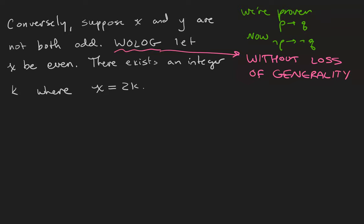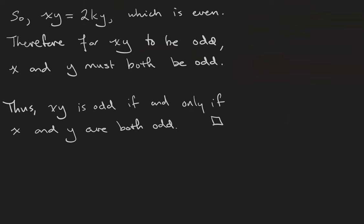That means there exists an integer k such that x equals 2k. Then x times y equals 2k times y. Notice I don't bother coming up with a form for y because y can be either even or odd — I'm just leaving it as y. But it doesn't matter, because 2ky is 2 times an integer, so it's even. Therefore, for x times y to be odd, x and y must both be odd.